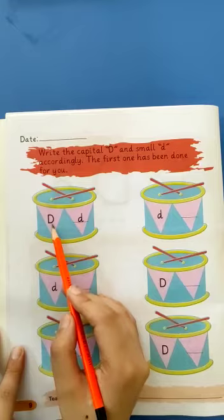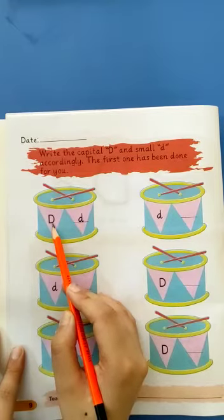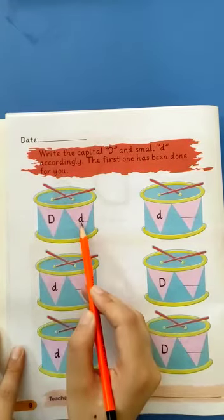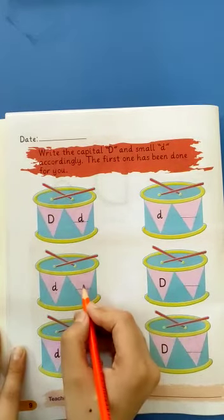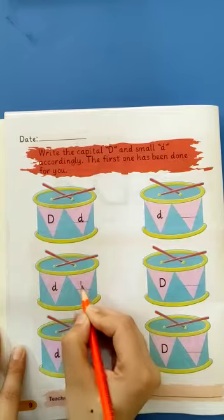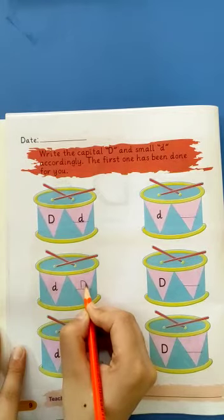And do you know what is this? It's capital D. And this one small d. And this one capital D. Write small. No, capital D. Very good.